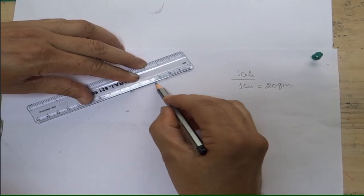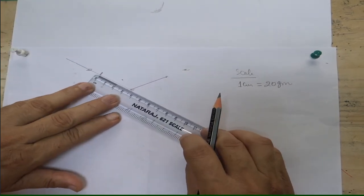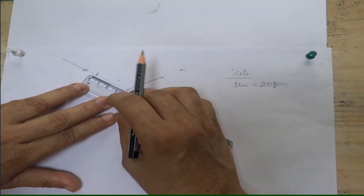So joining these two points. This was also 70 grams. This is 3.5. Check it again. So making it little darker for you.